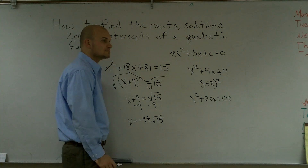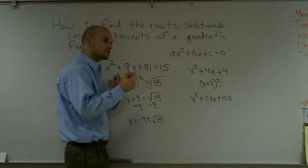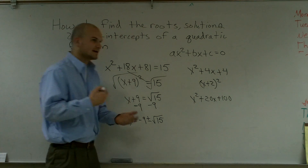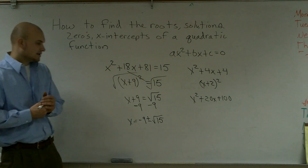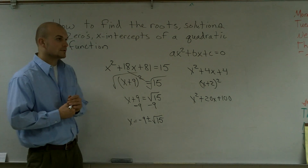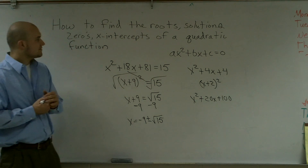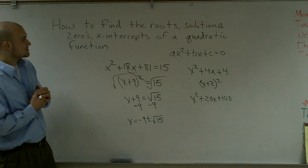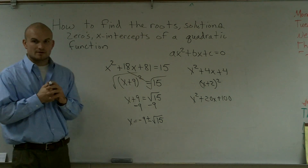For example, x plus 10 squared — just look out for those. They're not going to happen all the time, but they're a good shortcut. And that is how you find the roots, solutions, zeros, and x-intercepts of a quadratic function.